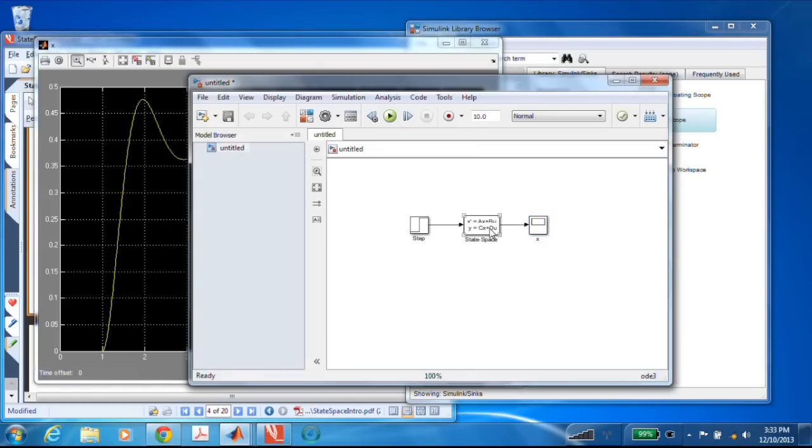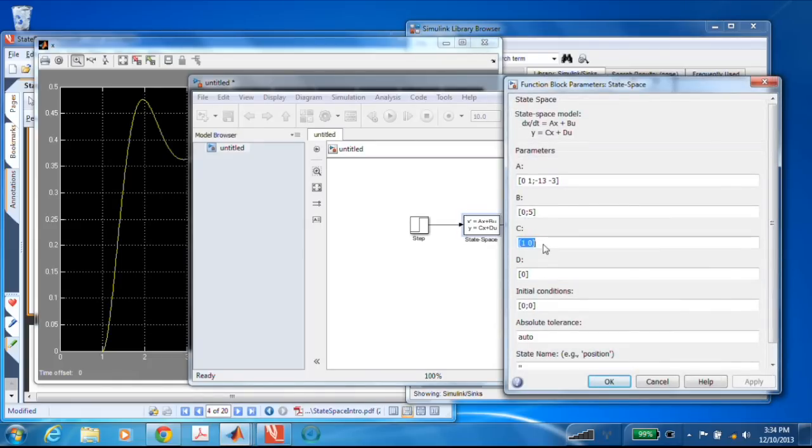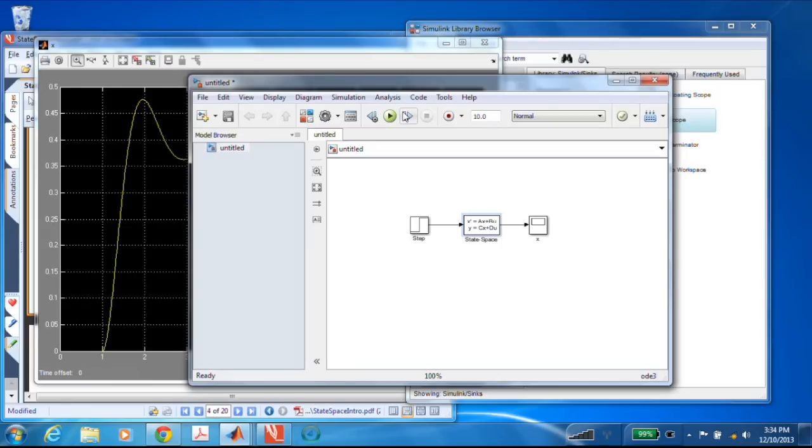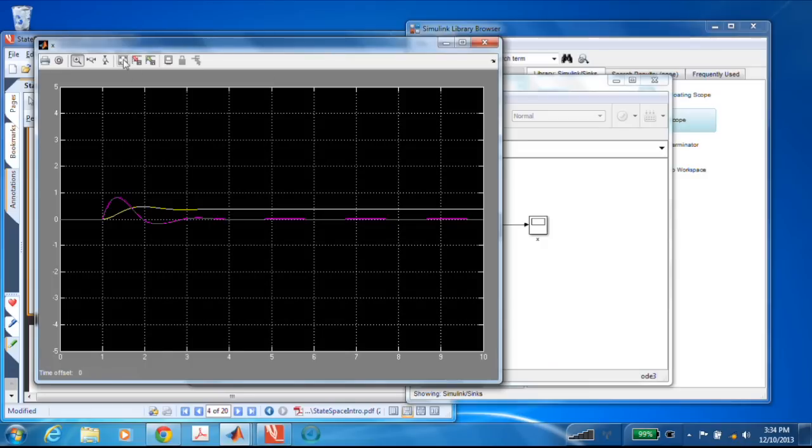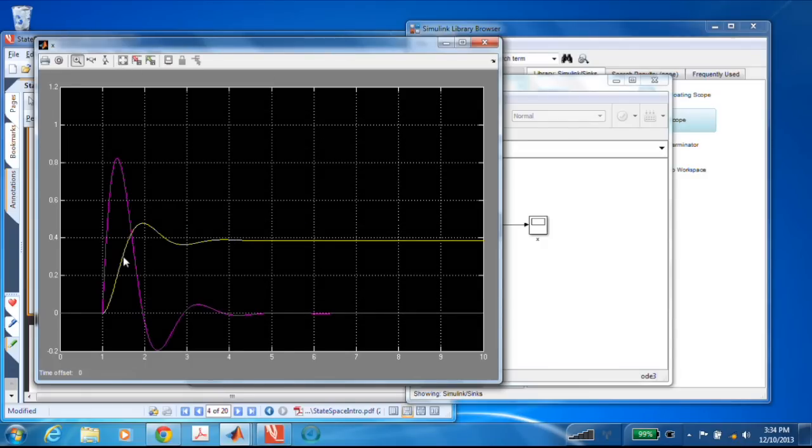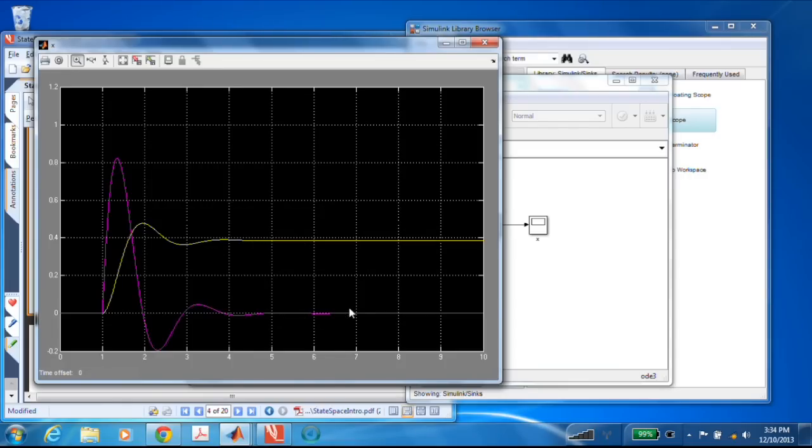If I wanted to see both states, I can easily do that by going into the C matrix and changing it to one, zero. That'll pick up the first state. Zero, one will pick up the second state. And then over here, I'll need to add another zero to my D matrix. So with that simple change, I can rerun it. And now I have this. My yellow is theta. And my pink is theta dot, or the speed. So as we see theta going to a constant value, of course, the speed is going to zero.